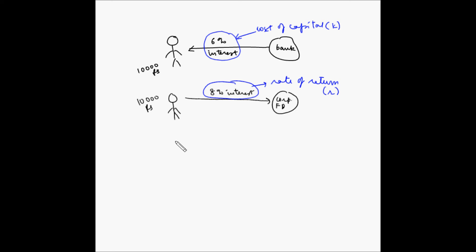So, for the IRR method, the acceptance rules are: first, accept the project when the rate of return is more than the cost of capital.